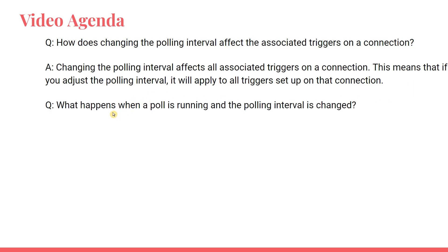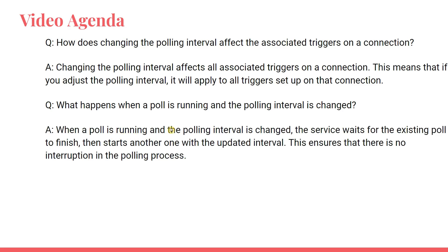What happens when a poll is running and the polling interval is changed? When a poll is running and the polling interval is changed, the service waits for the existing poll to finish. Polling means it is trying to send some request and retrieve some data. It will wait for that to finish, then starts another one with the updated interval immediately. This ensures that there is no interruption in the polling process.